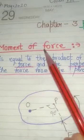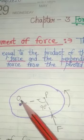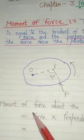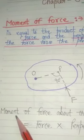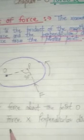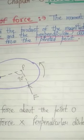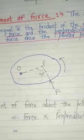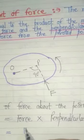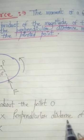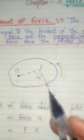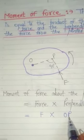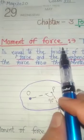So what is the moment of force? That is the perpendicular distance multiplied by the magnitude of the force. The moment of force about point O is equal to force multiplied by perpendicular distance of the force. So force is F and perpendicular distance is OP. Therefore, moment of force equals F into OP. The moment of force is also known as torque.